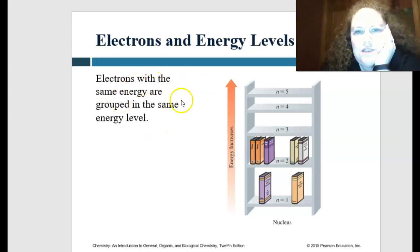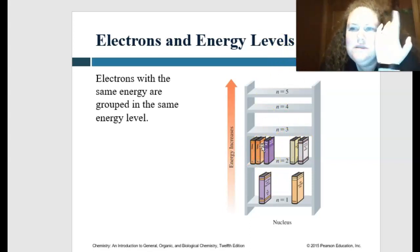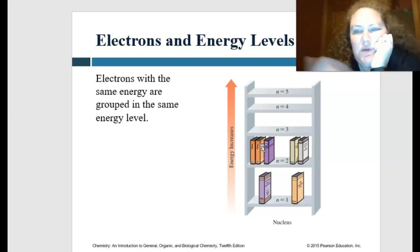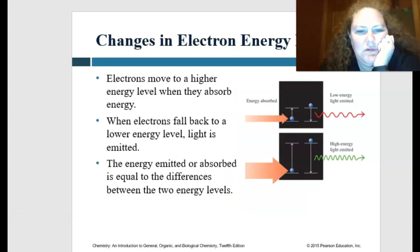So electrons with the same energy are grouped at the same energy level. You can kind of think of it as a bookshelf, and the smaller ones with the lower energy levels are on the lower shelves, and then as we increase, we're going to have higher energy levels. And I kind of think of electrons almost as like gnats buzzing around in these orbitals.